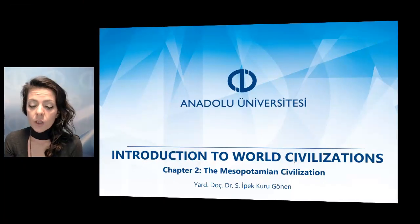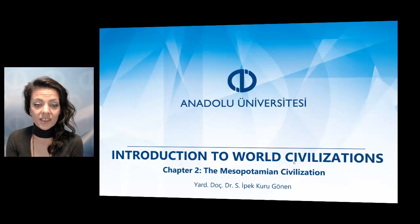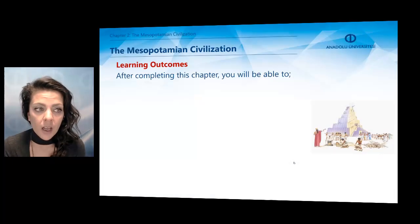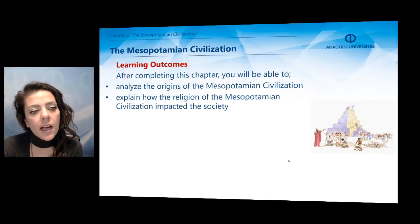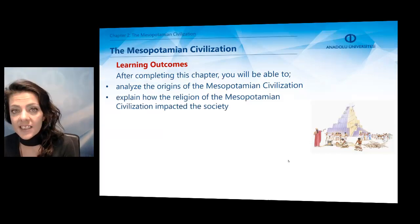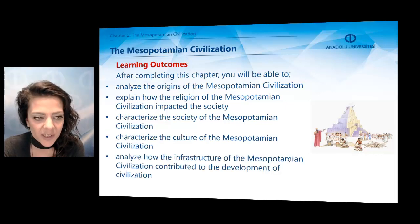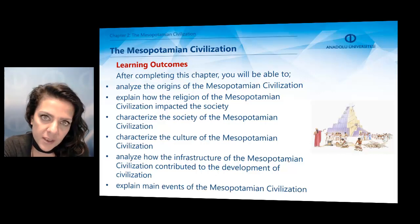In the first chapter, we looked at the issue of civilization in general, and now we are moving forward to specific civilizations that can be considered under the world civilization issue. The first civilization we are going to deal with is the Mesopotamian civilization. Let us look at the learning outcomes of this chapter. After completing this chapter, you will be able to analyze the origins of the Mesopotamian civilization, explain how the religion of this civilization impacted the society in general, characterize the society and culture of this civilization, analyze how the infrastructure of the Mesopotamian civilization contributed to the development of civilization in general, and explain the main events of the Mesopotamian civilization.